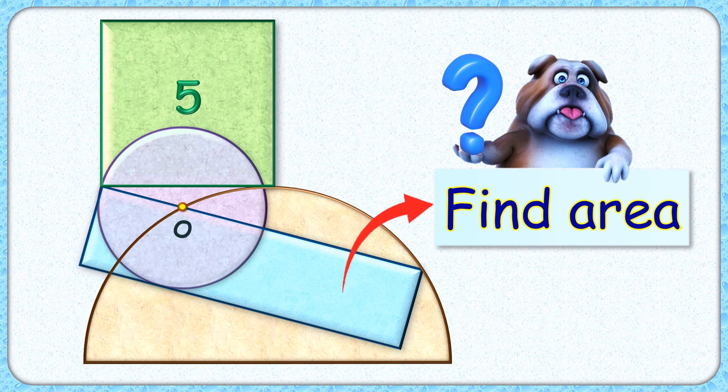Welcome everyone to this interesting question. Given to us is a square, a circle, a rectangle, and a semicircle. The side length of the square with area 5 centimeter square is tangent to the semicircle. The vertex of the square and the rectangle lies on the circumference of the circle.